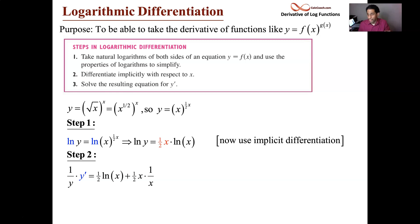Derivative of the first, one-half, times the second, natural log of x, plus the first, one-half x, times the derivative of the second. And we learn natural log of x's derivative is 1 over x.